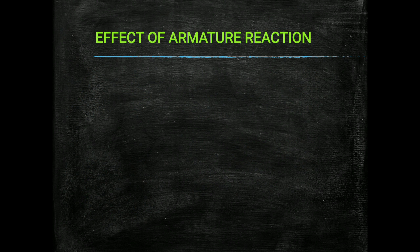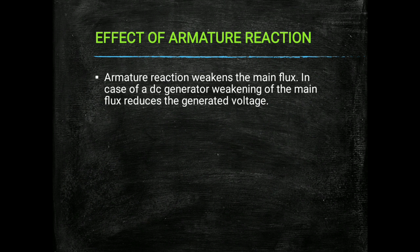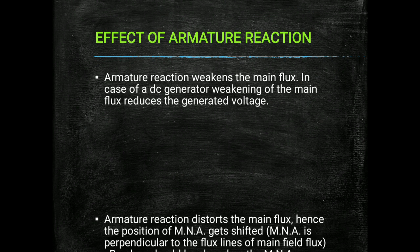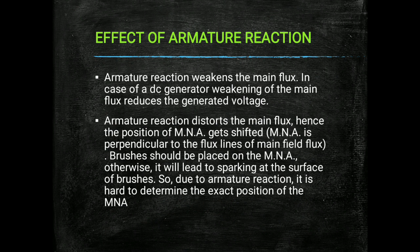The effects of armature reaction are as follows. First, armature reaction weakens the main flux because the armature flux opposes the main field flux. In a DC generator, weakening of the main flux reduces the generated voltage. Second, armature reaction distorts the main flux, and hence the position of the MNA gets shifted. As already stated, brushes should be placed on the MNA; otherwise it will lead to sparking at the surface of the brushes.